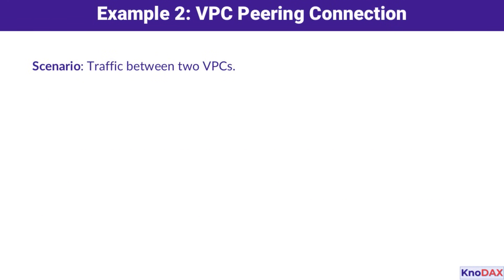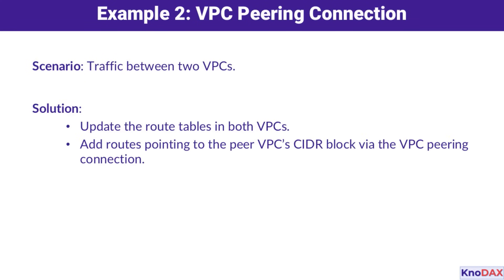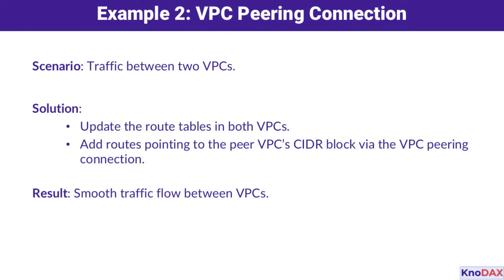Another scenario involves connecting two VPCs. To enable traffic between them, you'd update the route tables in each VPC to include routes pointing to the other VPCs via the peering connection. This ensures seamless communication across VPCs.